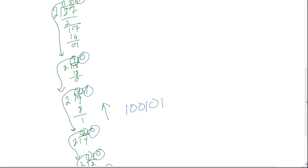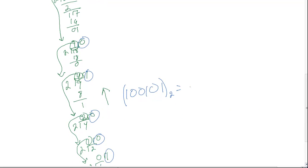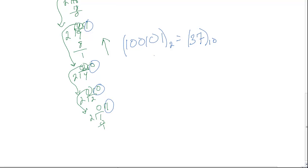So 100101 in base 2 is equal to our original base 10 number 37. And we can check this by converting this number using the Radix formula and converting back into base 10. So let's figure out what 100101 in base 2 is equal to in base 10.